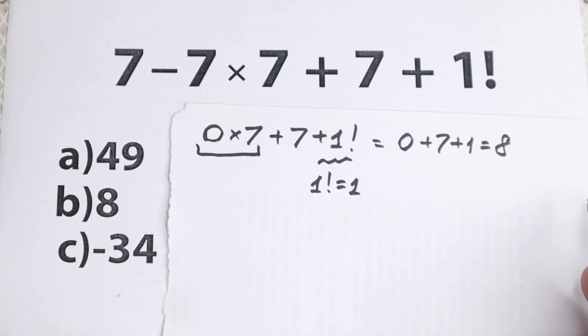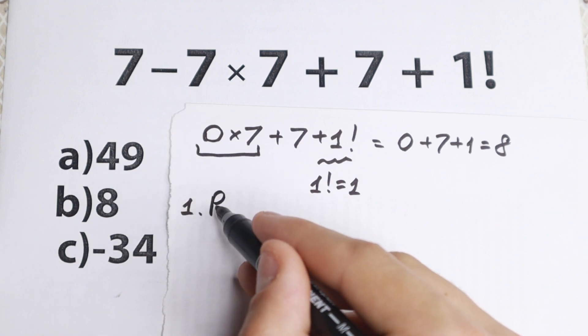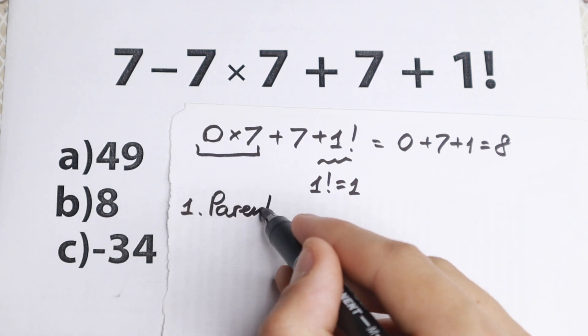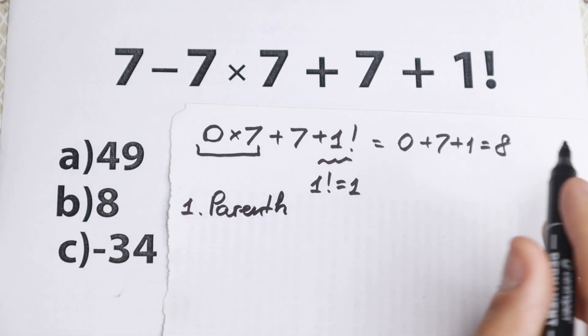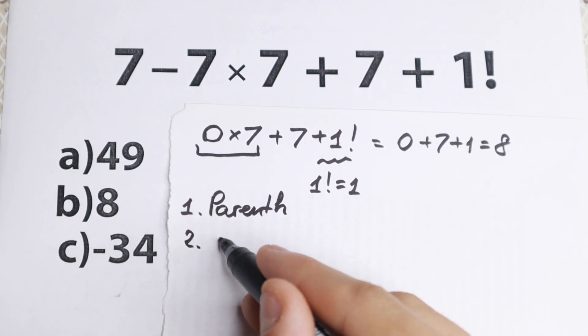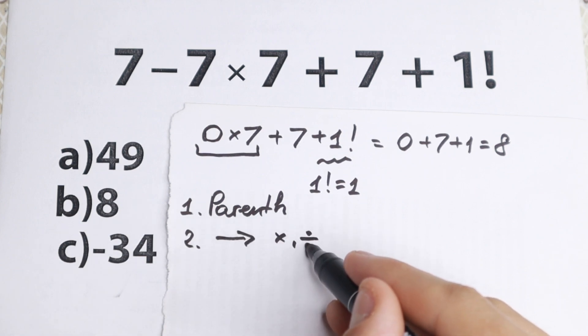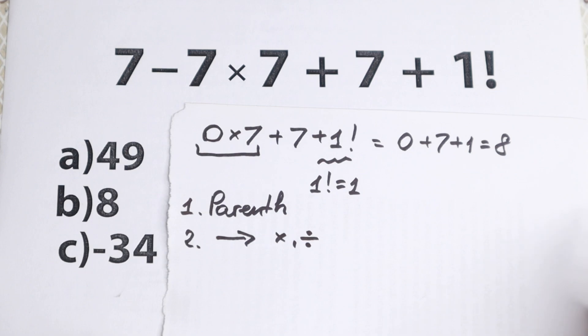But we need to know the order of these operations right here. So firstly we need to see about the parentheses. Parentheses right here. We don't have these parentheses, so this is really great. So we just go from left to right, starting with multiplication and division.